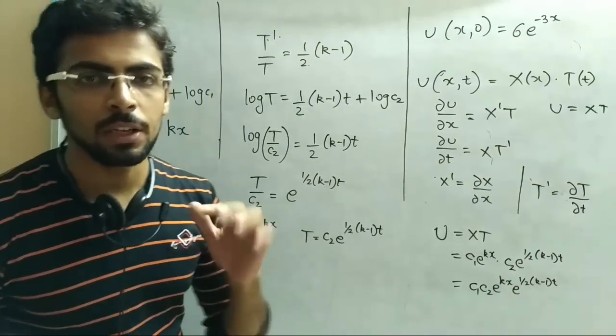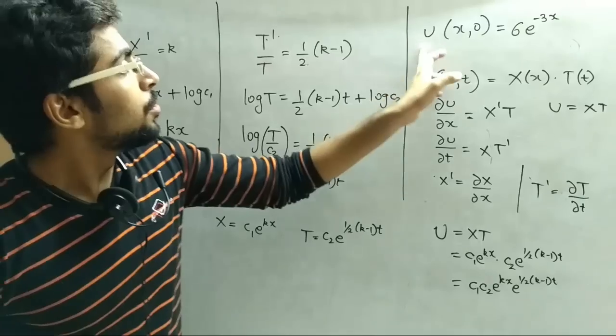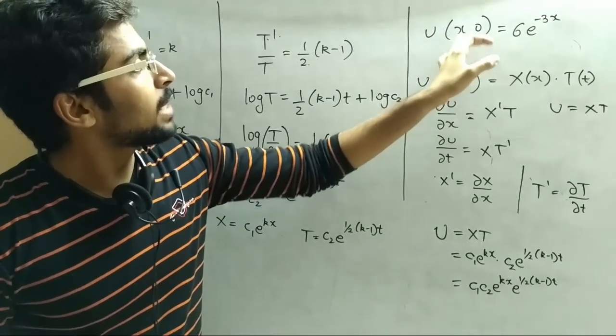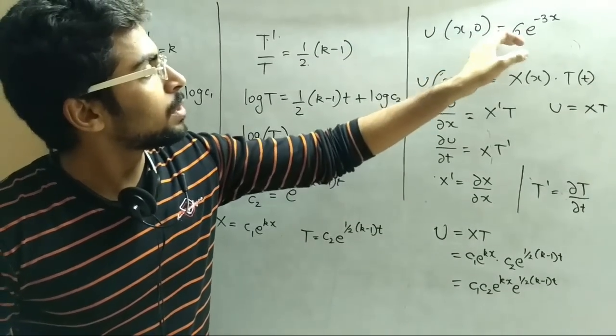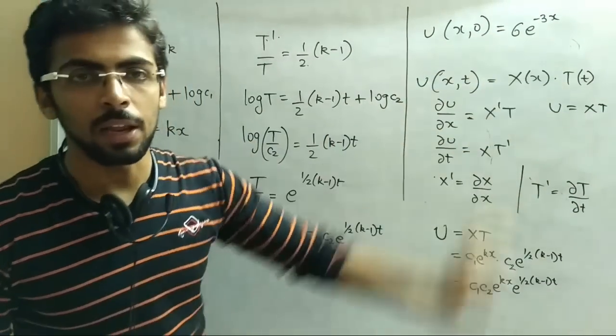Lekin question ke andar aapko puchha gaya hai the boundary condition: u of x comma zero equals to 6 e raised to minus 3x. So is part ko iske saath compare karna hai.